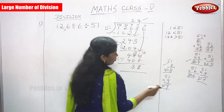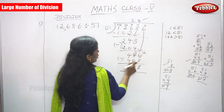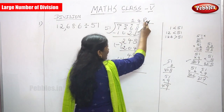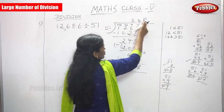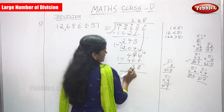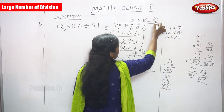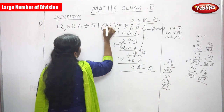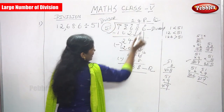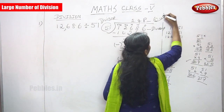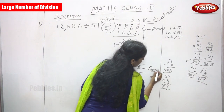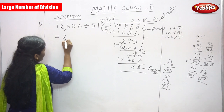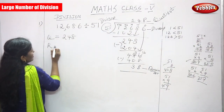So the answer: the quotient is 248 and the remainder is 38. This is the dividend, this is the divisor (D-I-V-I-S-O-R), this is the quotient (Q-U-O-T-I-E-N-T), and this is the remainder. So for 12,686 ÷ 51, the quotient equals 248 and the remainder is 38.